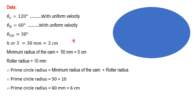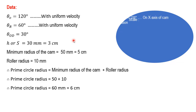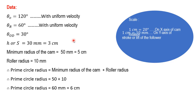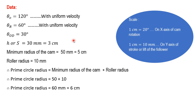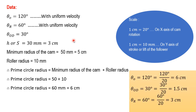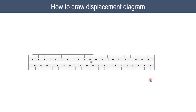The important part is the scale. On the x-axis, 1 centimeter equals 20 degrees of cam rotation. On the y-axis, 1 centimeter equals 10 mm of lift or stroke of the follower. The outstroke is 120 degrees, so 120 divided by 20 gives 6 centimeters on the displacement diagram. The outstroke dwell is 30 degrees, so 30 divided by 20 gives 1.5 centimeters. The return stroke is 60 degrees, so 60 divided by 20 gives 3 centimeters. The total is 6 plus 1.5 plus 3, which equals 10.5 centimeters for outstroke, outstroke dwell, and return stroke. We first draw a 10.5 cm length divided into 6 cm, then 1.5 cm, and 3 cm.